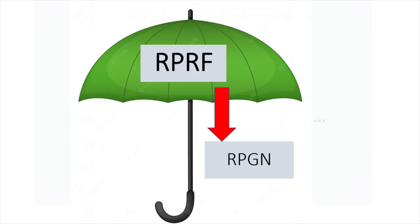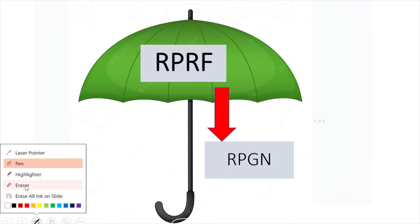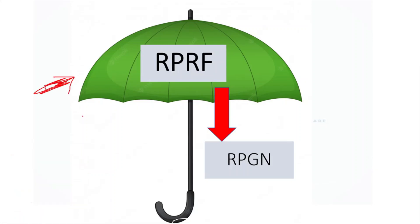RPRF can also occur due to interstitial, obstructive, or vascular causes, but glomerular involvement is by far the most common. There are many glomerular diseases involved — post-streptococcal glomerulonephritis, SLE, IgA nephropathy, and the list expands. Since the level of discussion today is for undergraduate students, I am keeping it at the conceptual understanding of RPGN. So RPRF is the umbrella term, and when only the glomerulus is involved and the kidney is going for rapid dysfunction due to glomerular disease, it is called rapidly progressive glomerulonephritis.